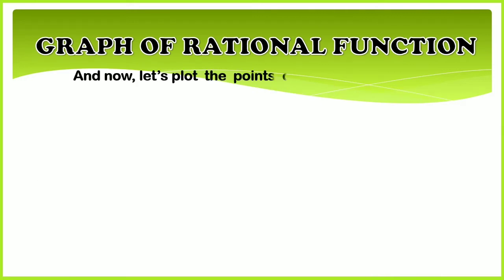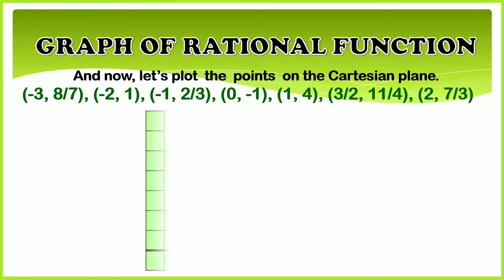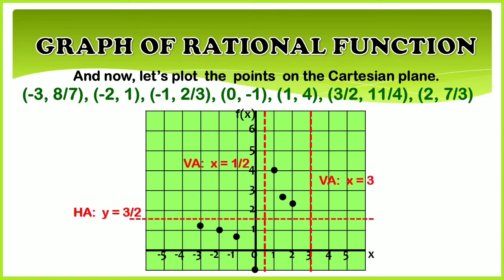Now let's plot the points on the Cartesian plane. We are done graphing the given rational function, finding the x and y intercepts, and determining the vertical and horizontal asymptotes.